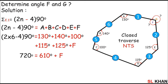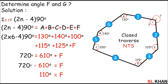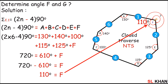We move 610 degrees to the other side: 720 degrees minus 610 degrees equals F. So F equals 110 degrees. Now that we have angle F, we can calculate angle G easily, because the whole circle is 360 degrees. So 360 minus 110 degrees gives us angle G, which is 250 degrees.